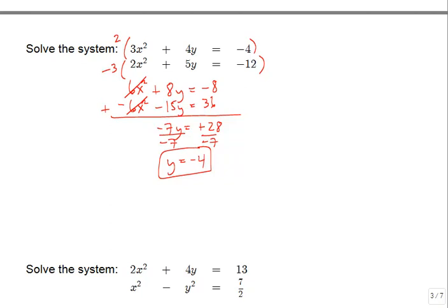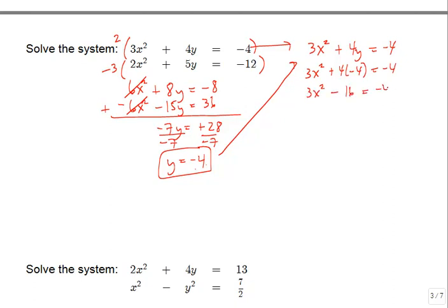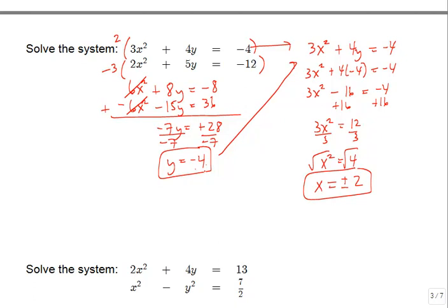You're not done until you also find x. We substitute y equals negative 4 back into the top equation: 3x squared plus 4 times negative 4 equals negative 4, which becomes 3x squared minus 16 equals negative 4. Adding 16 to both sides gives 12, then dividing by 3 gives x squared equals 4. Taking the square root—don't forget the plus or minus—square root of 4 reduces to 2, so we get two x values: positive 2 and negative 2.